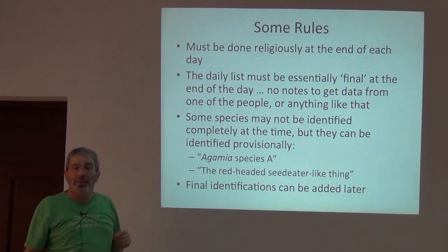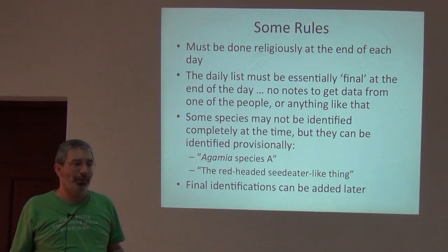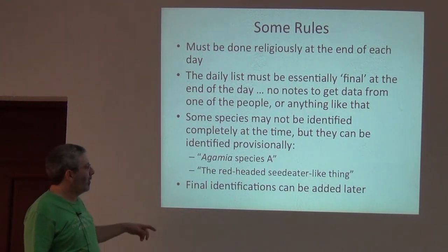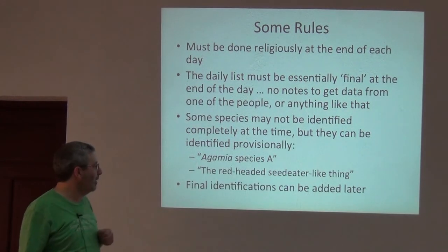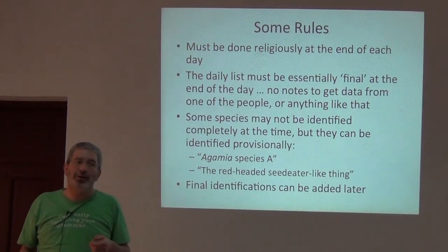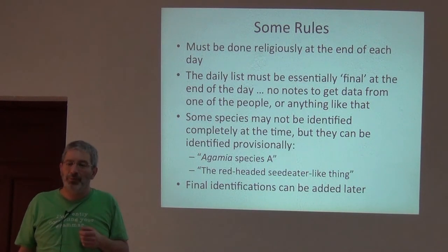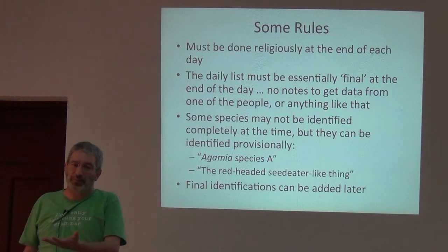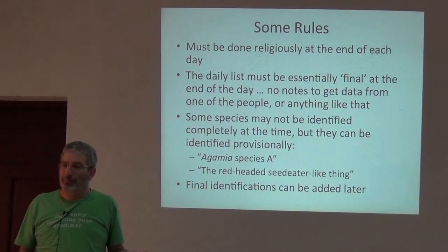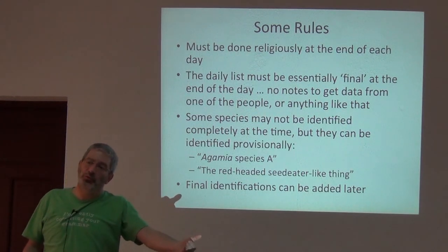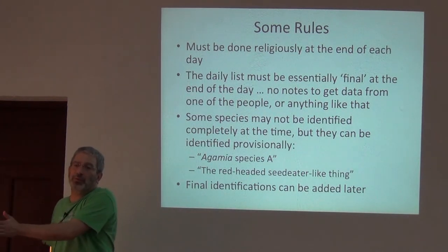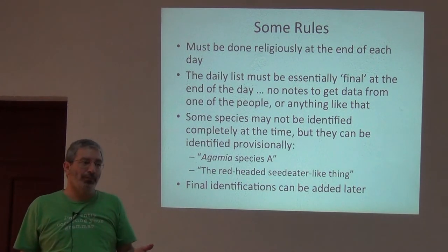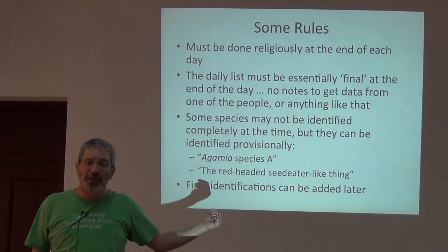Some species may not be identified or identifiable, but you can certainly do 'Agamia species A' or 'the redheaded seed eater,' and you can change and figure those out later, particularly if you've obtained specimens. This is a way of complementing the specimens — we don't get specimens of everything, so this complements us towards completing the inventory. We would love specimens of everything, but we never have them.